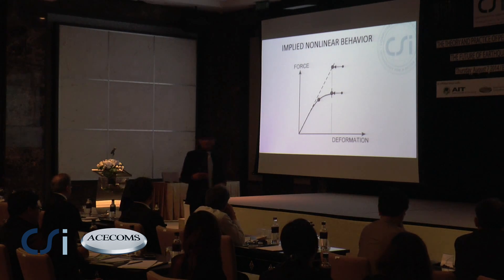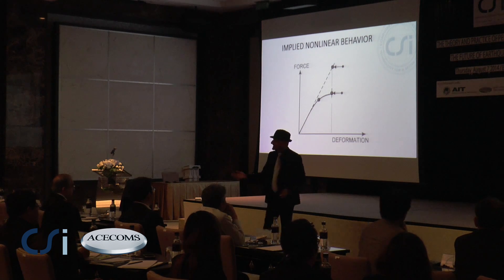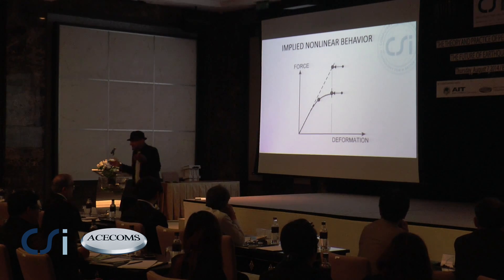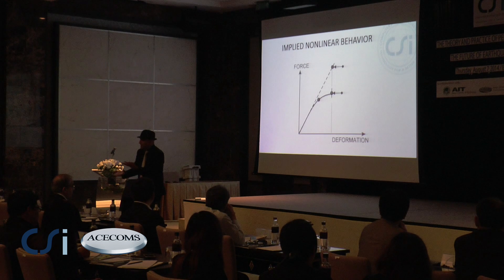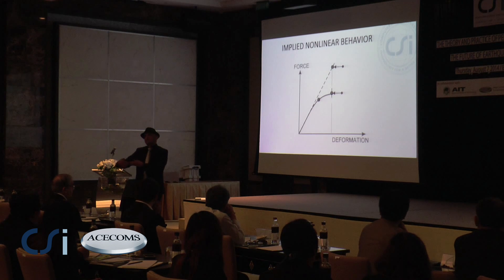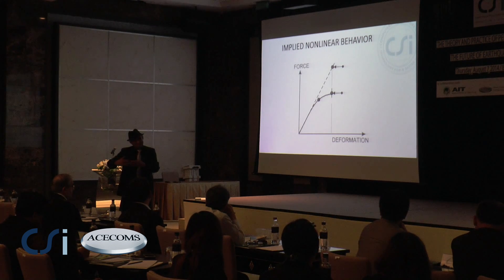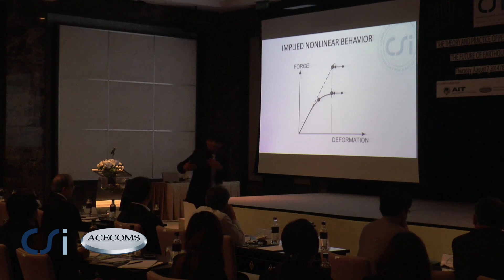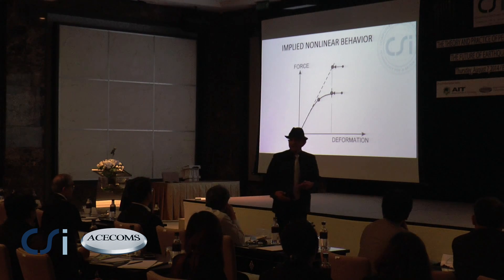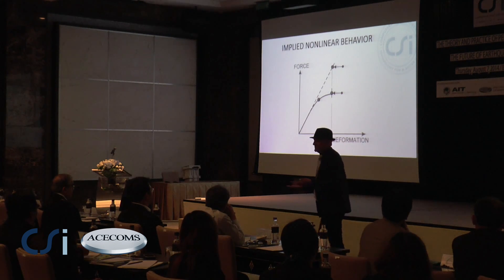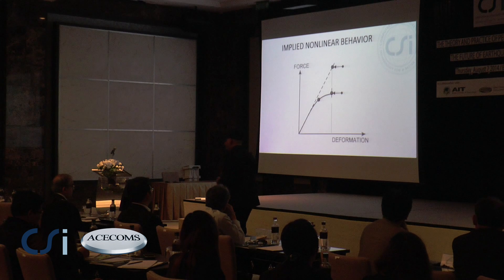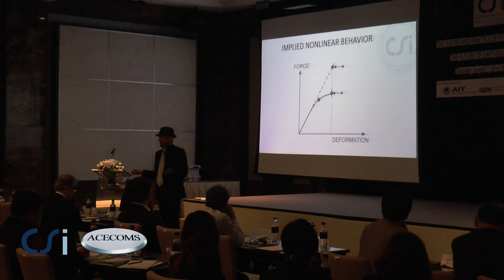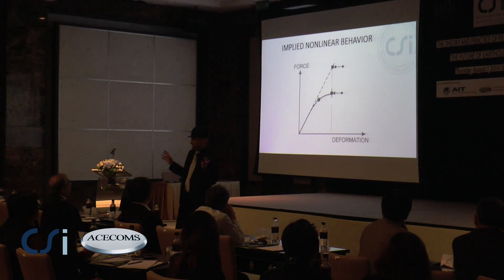The problem is the following. Here we have a very, very simple structure. You can really simplify the structure to just a single cantilever. When you apply the load to a single cantilever, you've got only one load, one element — one object is actually yielding. Even if it were a simplistic symmetric structure — simple one-story or two-stories — all of them would probably yield at the same time. But of course, these days, you don't have structures like that.